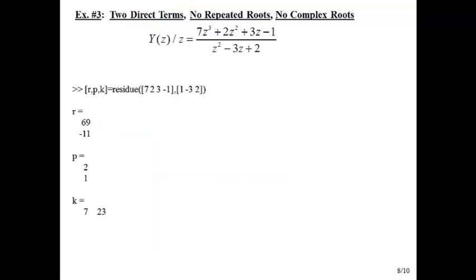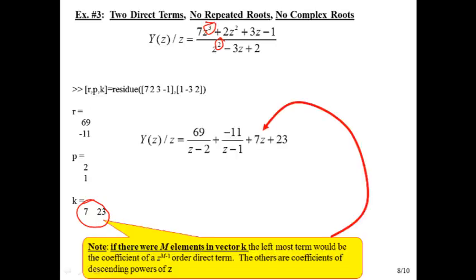Another example with two direct terms. Notice the numerator order is one more than the denominator, so P equals 1, P plus one is 2, so we'll have two direct terms. We have two direct terms: 7 goes with a Z and 23 goes as a constant. If there were M elements in our direct term vector, the leftmost term would be a coefficient of order Z to the M-1. We've got two elements, so 2-1 gives us Z. If we had three elements, we'd have Z squared, Z, and a constant.